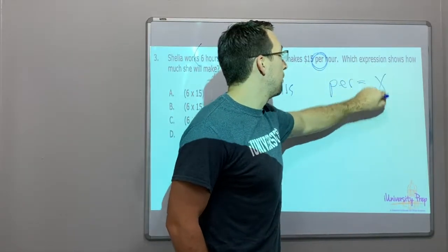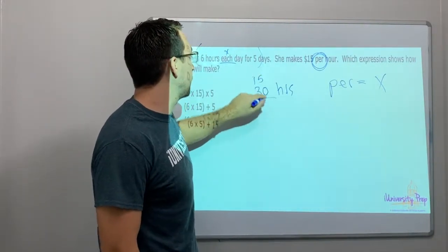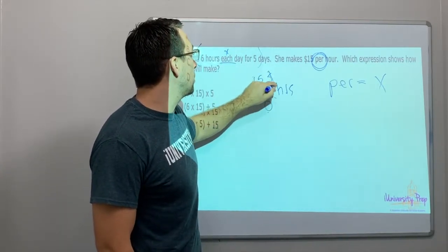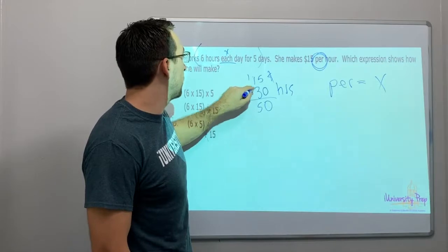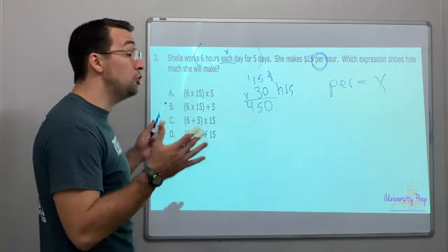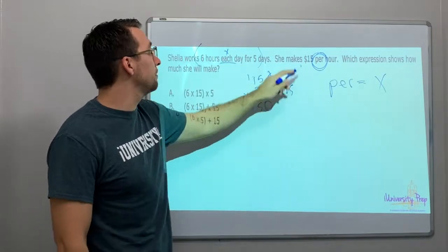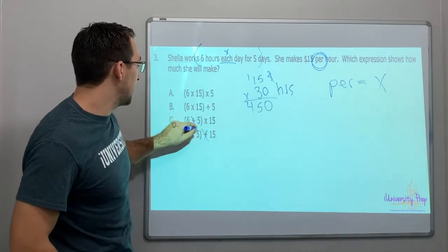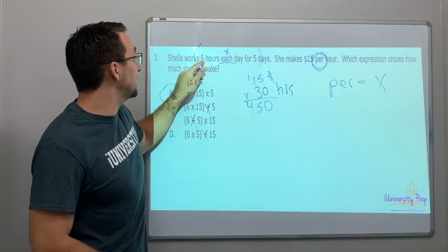Every time you see 'per,' that equals multiply. Per equals multiply. Fifteen times 30, or 30 times 15 — add a zero — this is how much money she made. She made fifteen dollars per hour for 30 hours, so that's one hundred fifty dollars. Not bad! So we have to multiply six times five times fifteen — that's all multiplication.